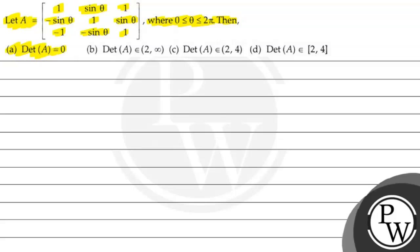Option A: determinant of A is equal to 0. Option B: determinant of A belongs to open interval (2, infinity). Option C: determinant of A belongs to open interval (2, 4). Option D: determinant of A belongs to closed interval [2, 4]. So we have a matrix given A.